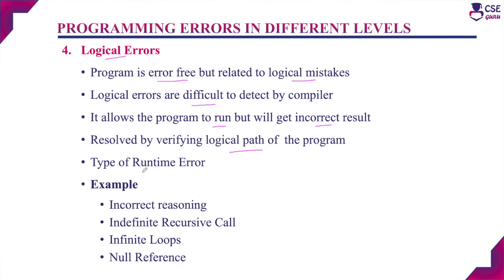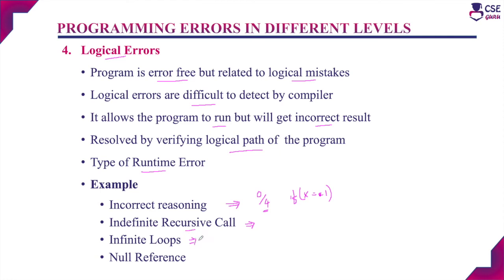Logical errors are a type of runtime error. Examples include incorrect reasoning — dividing a value by zero, or using a single equal sign '=' instead of double equal sign '==' in an if condition check. Indefinite recursive calls — where a function calls itself continuously without any termination point — also raise logical errors. Similarly, infinite loops with no proper termination condition execute infinitely and raise logical errors. These errors are identified only during runtime.